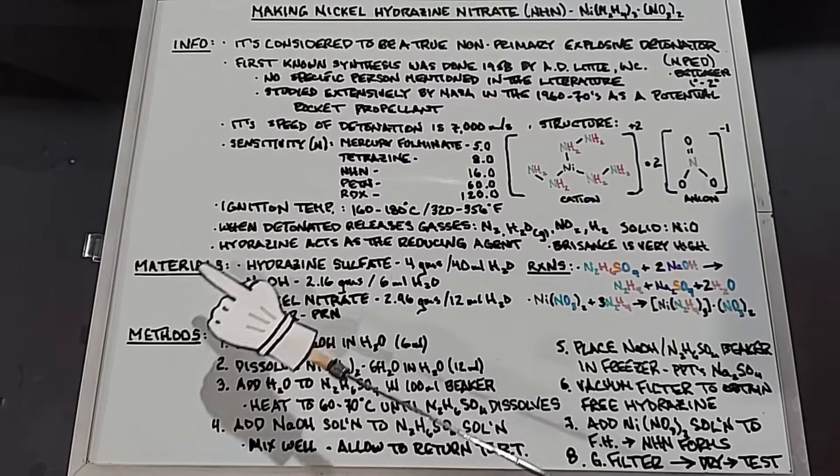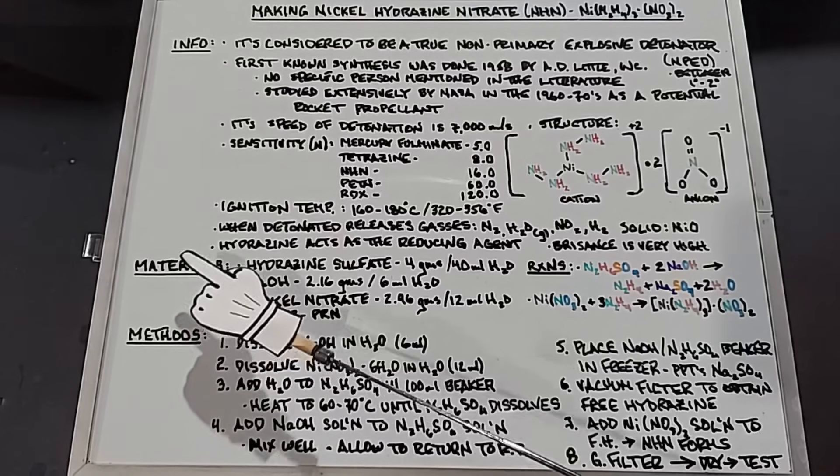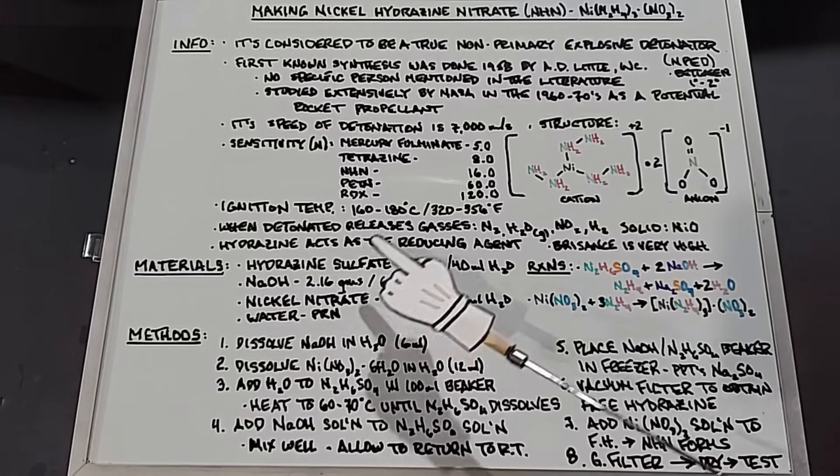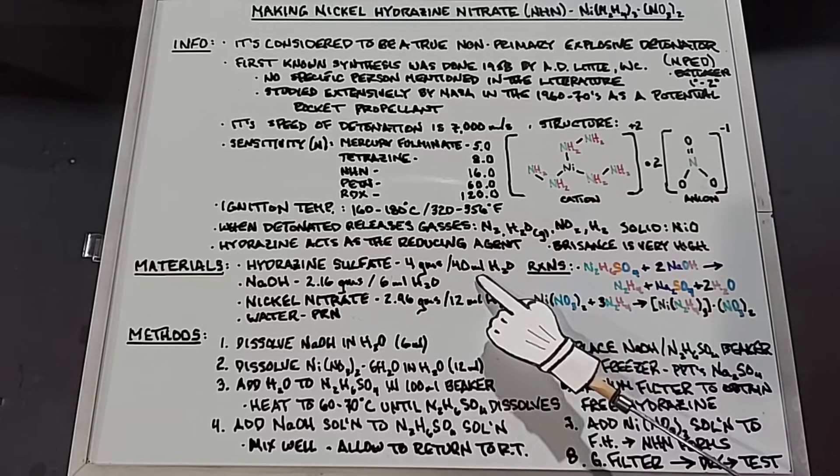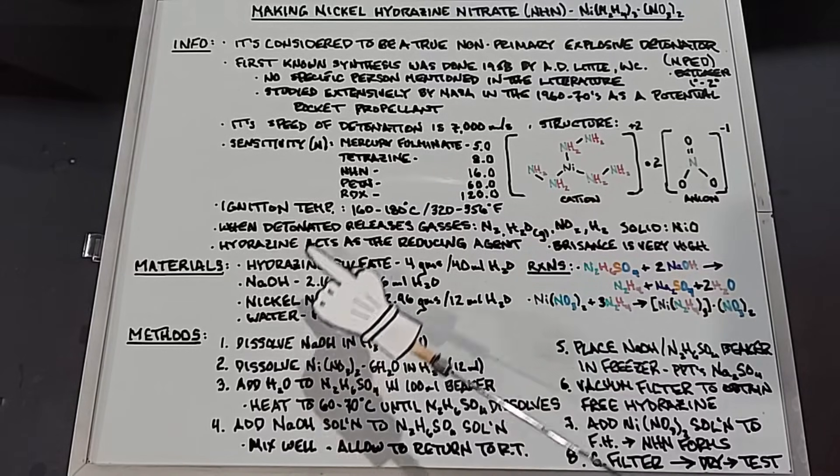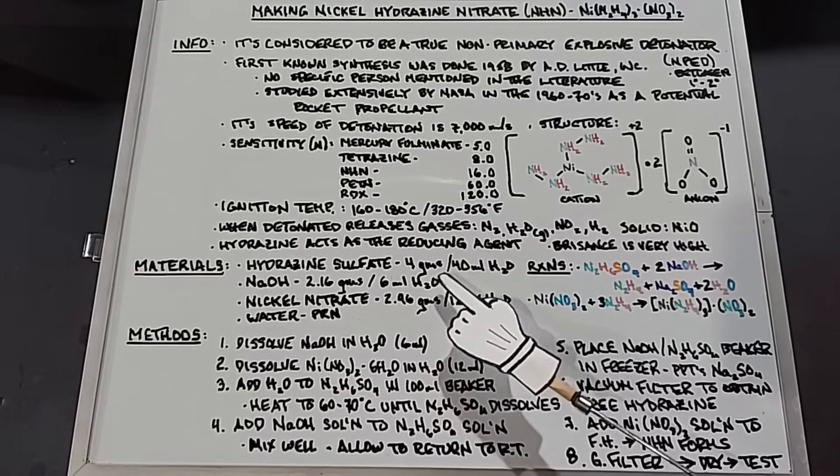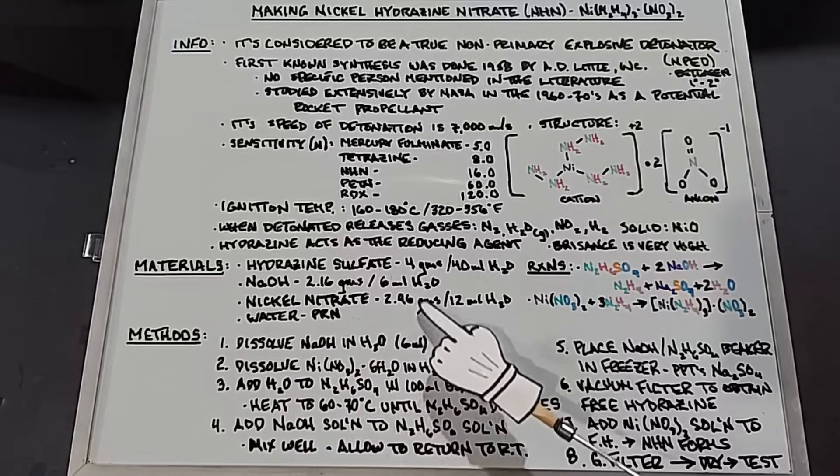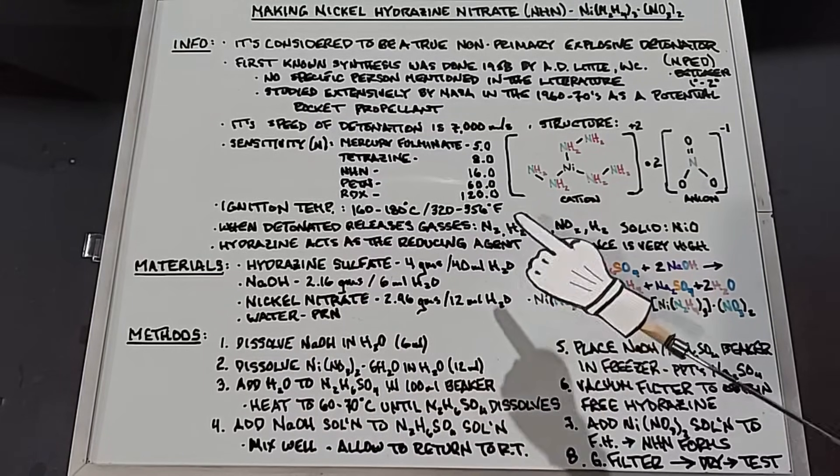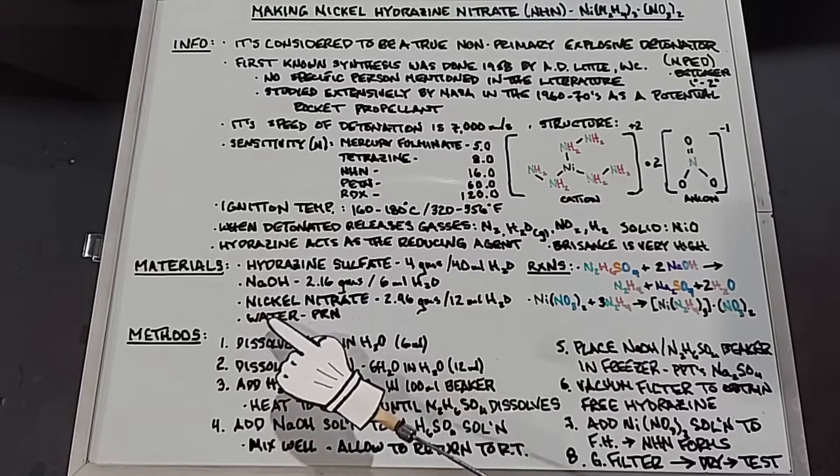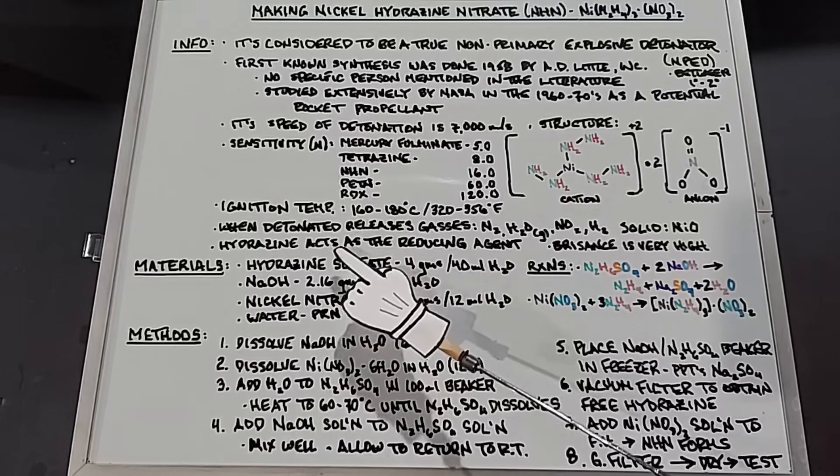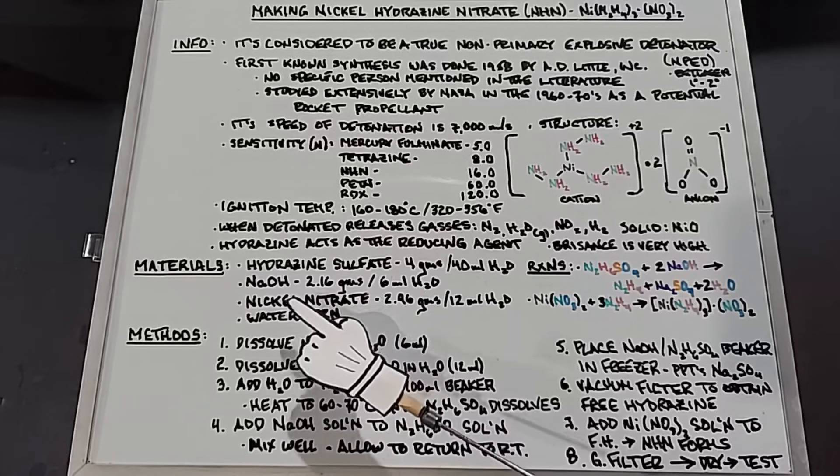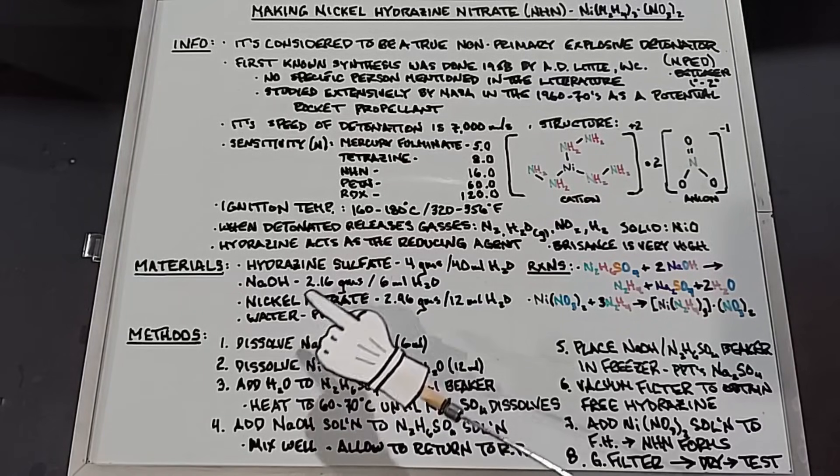In our materials, and I'm not going to make much of this for obvious reasons—everything I make I am going to either use up or destroy—we need hydrazine sulfate 4 grams dissolved in 40 milliliters of water, sodium hydroxide 2.16 grams dissolved in 6 milliliters of water, nickel nitrate 2.96 grams dissolved in 12 milliliters of water, and of course we need water. The hydrazine sulfate and the nickel nitrate were both things I made in previous videos relatively recently, so you can look back on those to see how those were done.